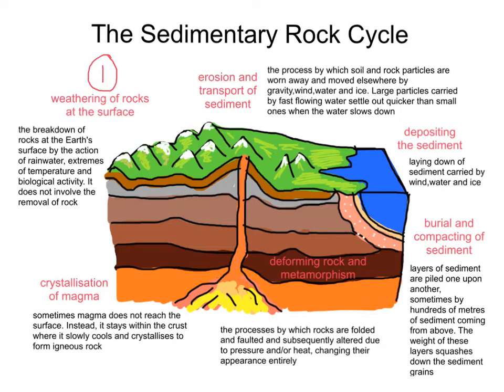So now we move to stage two in the cycle, and that is the erosion and then subsequent transport of the sediment. Stage two is the erosion and transportation of sediment. This is when soil and rock particles are actually worn away by the rain, by the wind, rivers, and the sea. Channels in the ground are cut out by torrents of rainwater, wearing away rock formations. These rock particles are then moved elsewhere by gravity, wind, or flowing water. Examples can include particles moving down a mountain slope, pebbles, sand, and mud, or as salts dissolved in water itself.